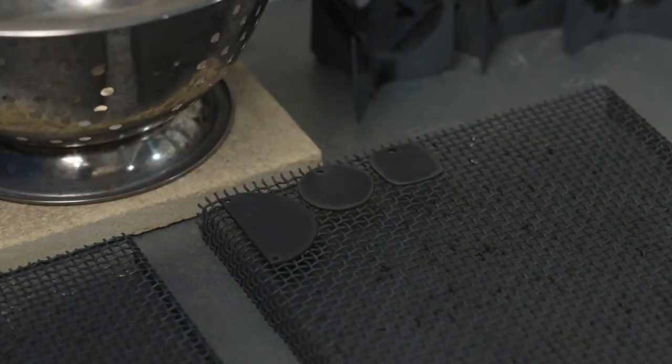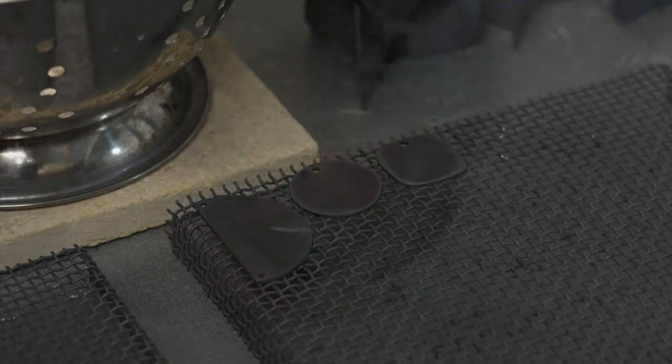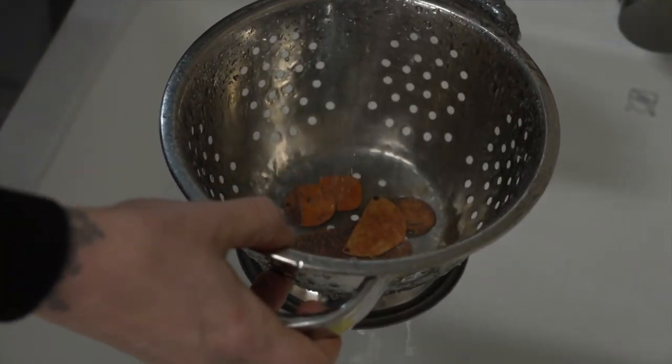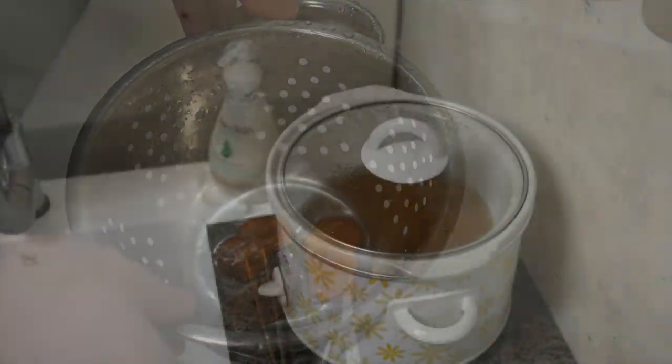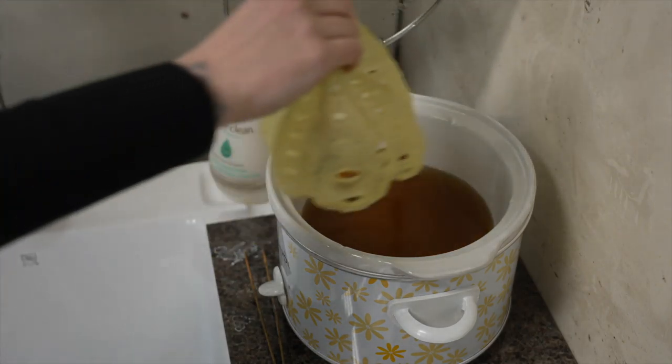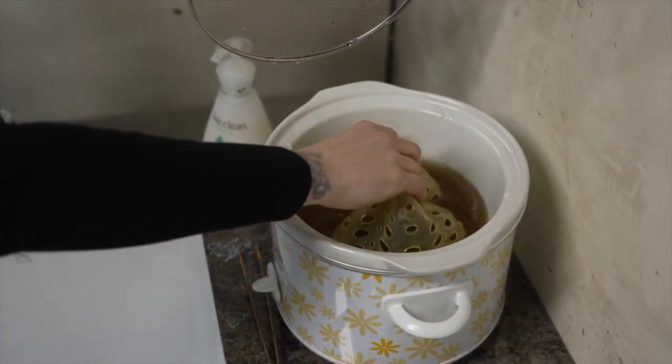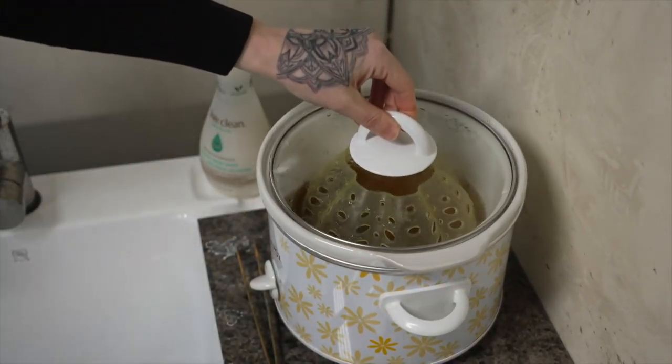This is called fire scale. Next, the pieces are rinsed under water to cool. Then placed in a rubber basket, then into an acidic bath known as a pickle pot. This will remove the fire scale.